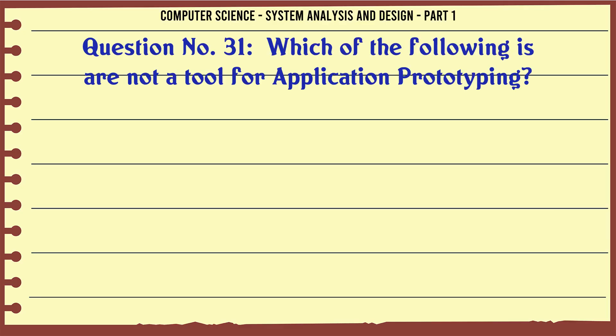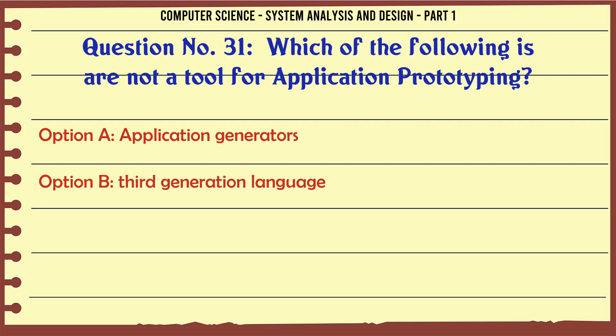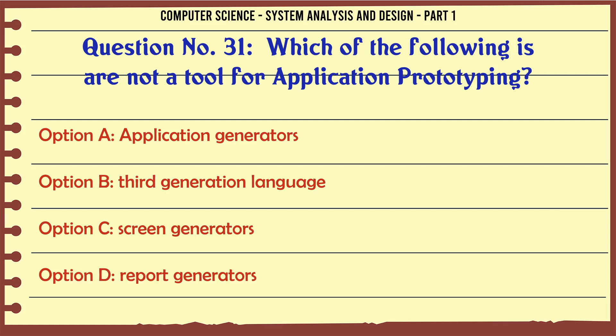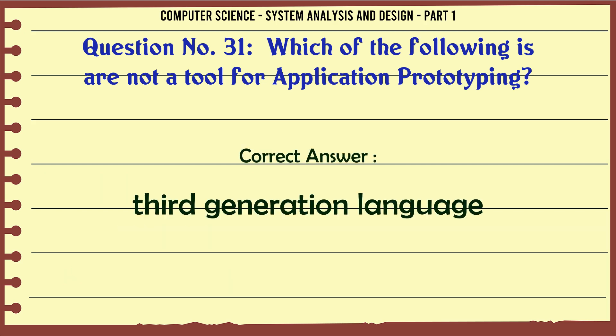Which of the following is not a tool for application prototyping? A. Application generators. B. Third-generation language. C. Screen generators. D. Report generators. The correct answer is: Third-generation language.